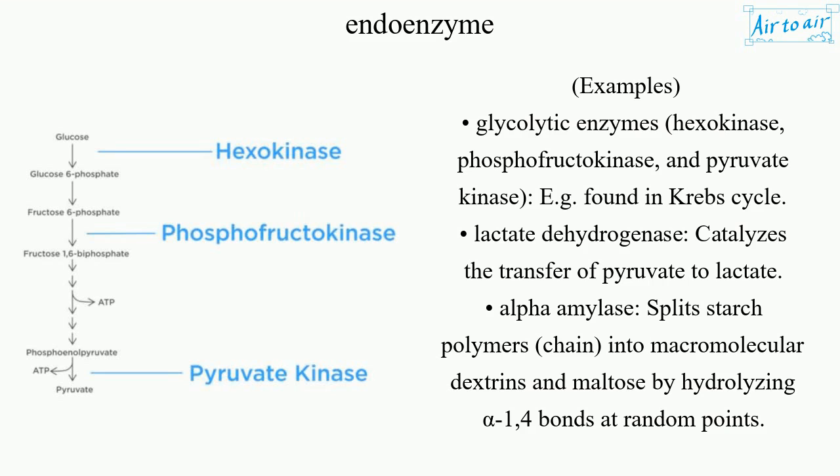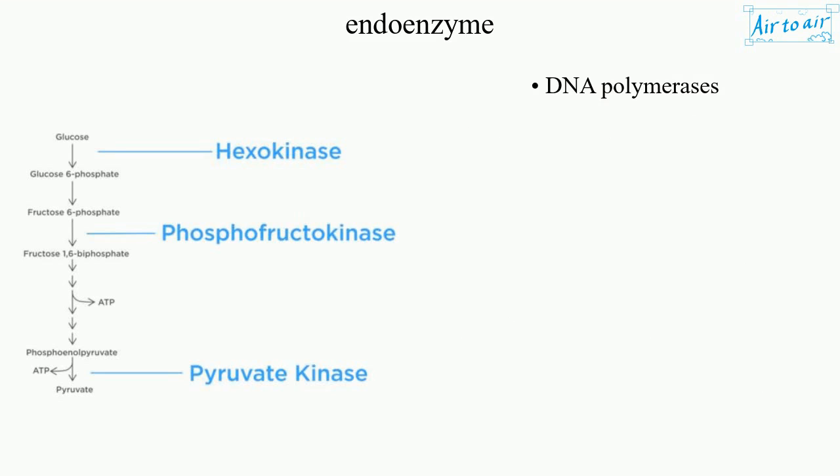Alpha amylase splits starch polymers into macromolecular dextrins and maltose by hydrolyzing alpha-1,4 bonds at random points. DNA polymerases.